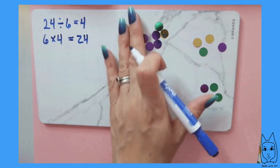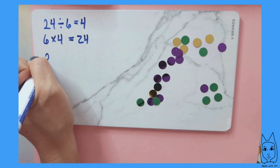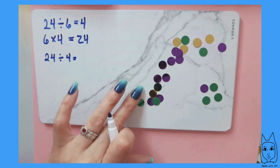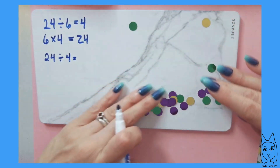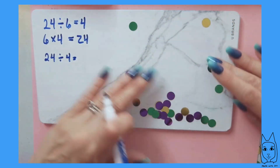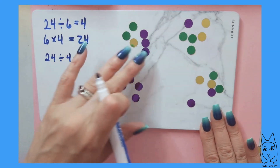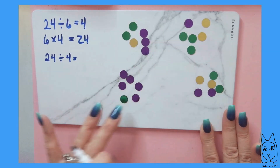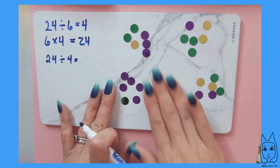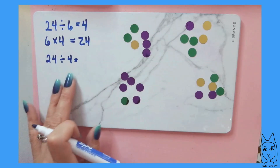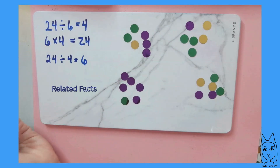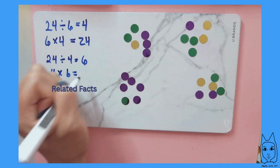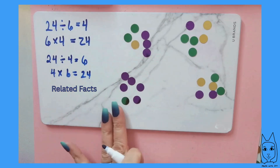Another way to divide these up: I could do 24 divided by 4. I get 4 equal groups and distribute them. Now I have 4 equal groups of 6. So 24 divided by 4 is 6. The related multiplication fact is 4 times 6 equals 24, so I have 4 groups of 6.